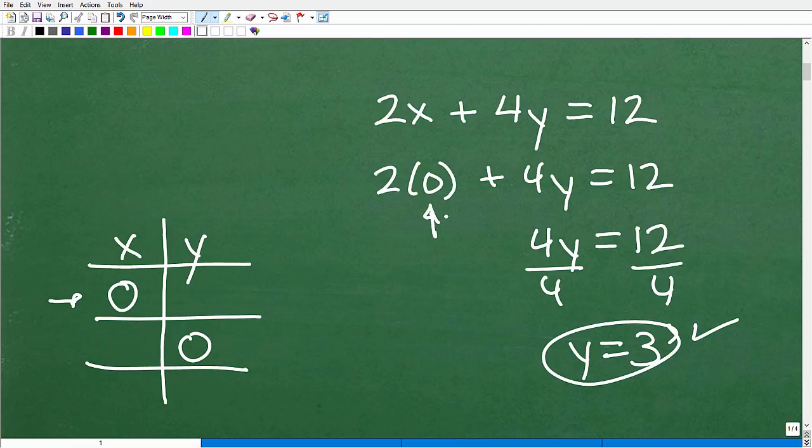Okay, so when x was zero, y was three. So I'm going to plug in a three right there. Now what that means is that the point zero three is on our line. It's on our line. And all we need is two points. But we'll get back to that in a second.